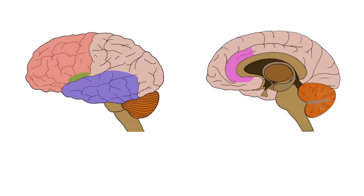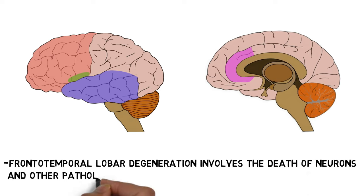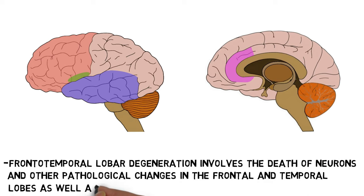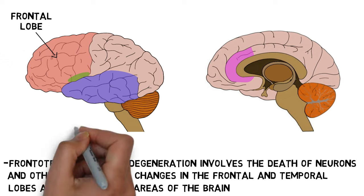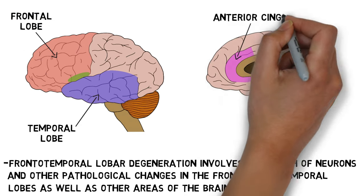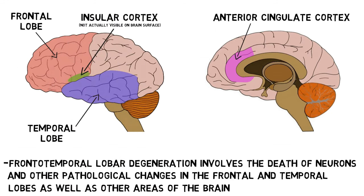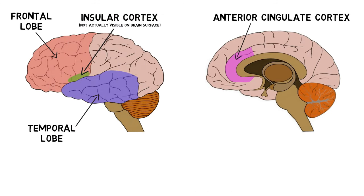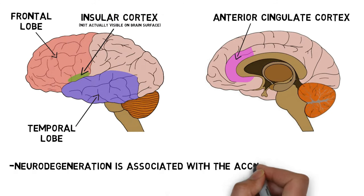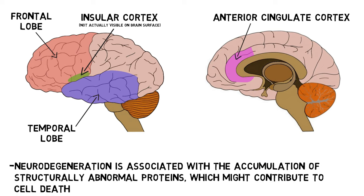FTD is associated with a pathological process called frontotemporal lobar degeneration, which involves the death of neurons and other pathological changes in the frontal and temporal lobes as well as other areas of the brain such as the anterior cingulate cortex and insular cortex. In FTD, the degeneration of neurons is associated with the accumulation of structurally abnormal proteins, which might contribute to cell death through multiple mechanisms.